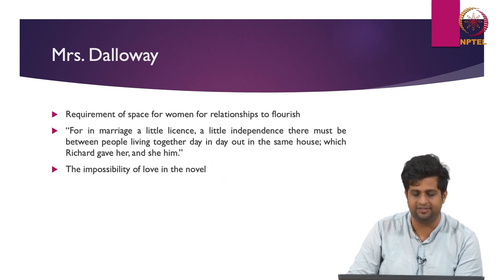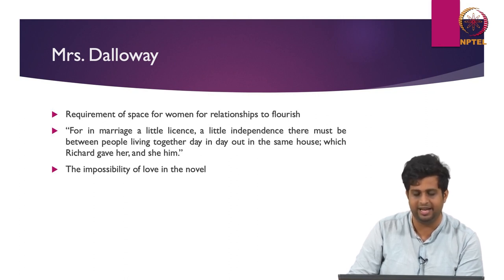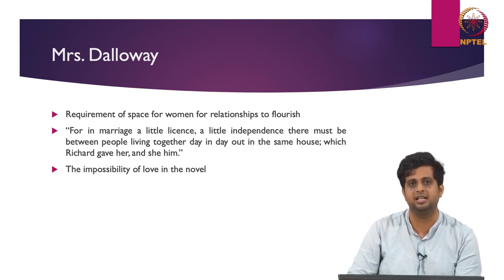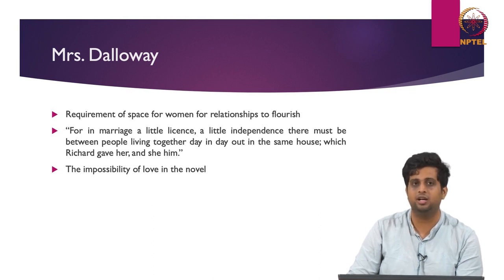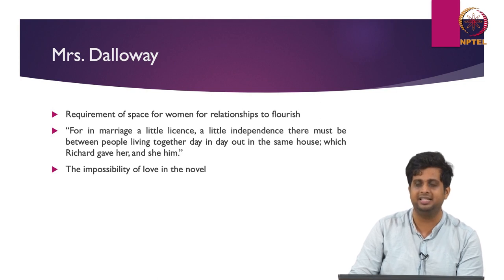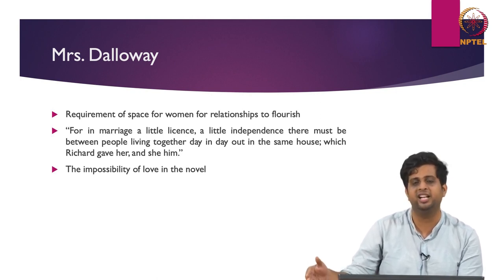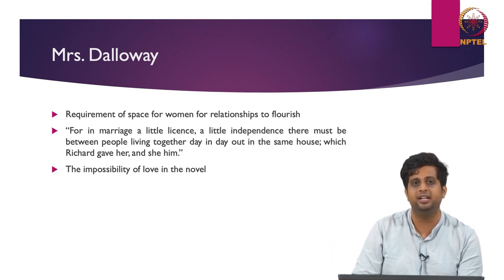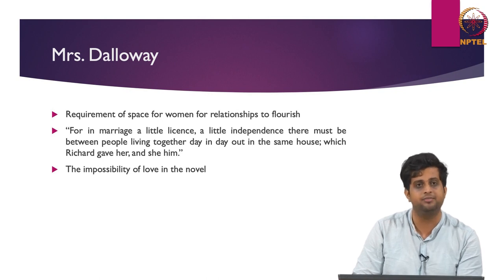Woolf asserts that women need their own space in a relationship when she remarks: 'For a marriage, a little license, a little independence there must be between people living together day in and day out in the same house, which Richard gave her and she him.' For Clarissa, a certain amount of space is needed for a relationship to flourish, but these gaps where love takes place between two people slowly turn into cracks where the possibility of love falls through, pushing people into the solitary lives they choose for themselves — impossibility of love becomes a condition in the novel.